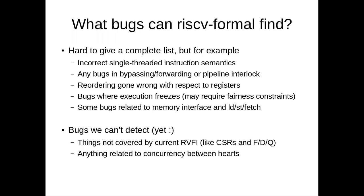Bugs not yet covered with RISC-V Formal include things not yet in the interface, like floating-point and CSRs, but these are on the to-do list and we are actively working on them. Anything related to concurrency between multiple cores is also not yet covered. The excuse has been that the RISC-V memory model wasn't completely specified yet, so we wouldn't know exactly what to check. But the RISC-V memory model is currently being finalized, so that excuse won't last much longer.